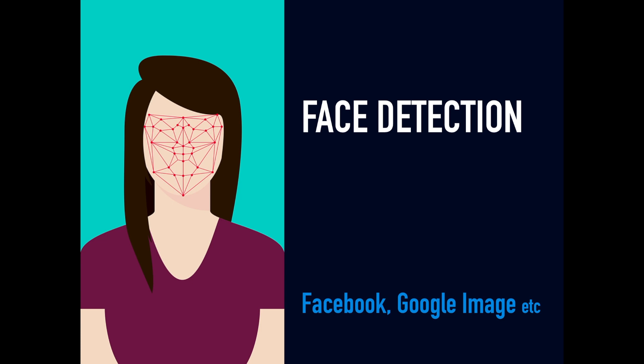The first real-time example is face detection, used both in Google and Facebook. When we upload images, it requests us to tag an image. Once tagged, it gets stored in the respective algorithms or database. Whenever we upload a new image, it automatically identifies and tags a name with the image. This happens due to machine learning — the tag provided previously is checked against the new image and matched accordingly.